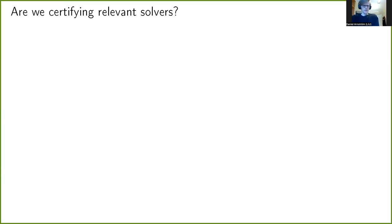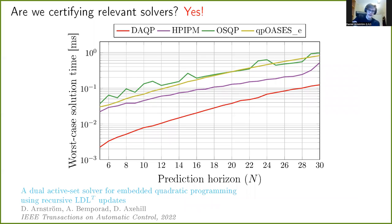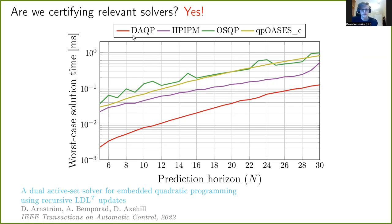Are the solvers actually usable in practice? Fortunately yes. Here is a plot from another recent publication in Transactions on Automatic Control comparing our proposed solver — shown in red — with other popular solvers used in real-time MPC: OSQP, qpOASES, and HPIPM, which is increasing in popularity. Our solver is about an order of magnitude faster for this particular example — an aircraft benchmark problem popular for MPC and QP solvers. So not only is this solver certifiable, it also performs very well in practice, which is a good combination.